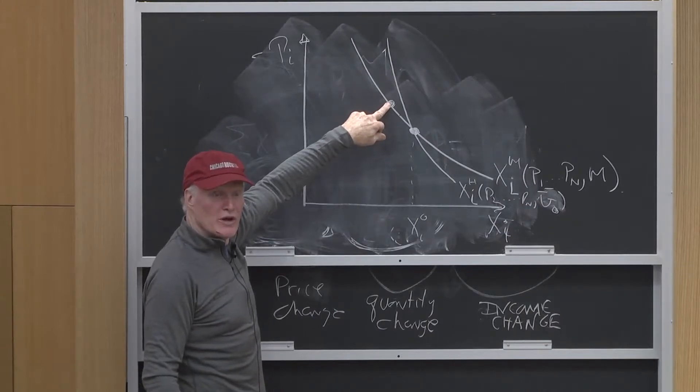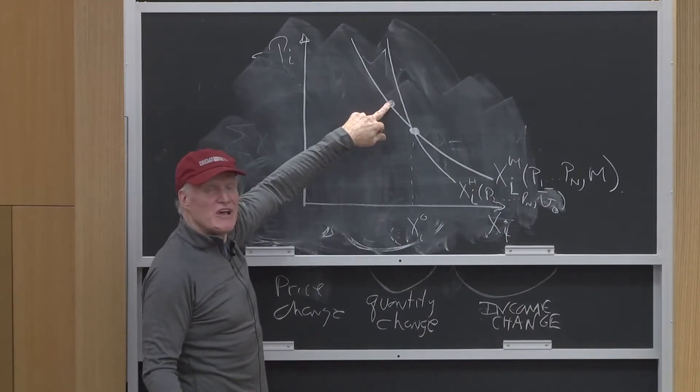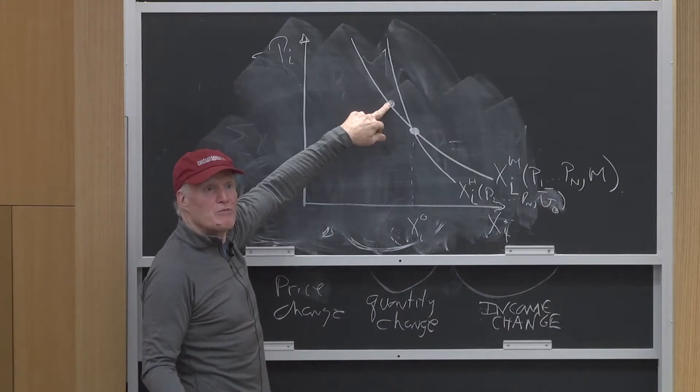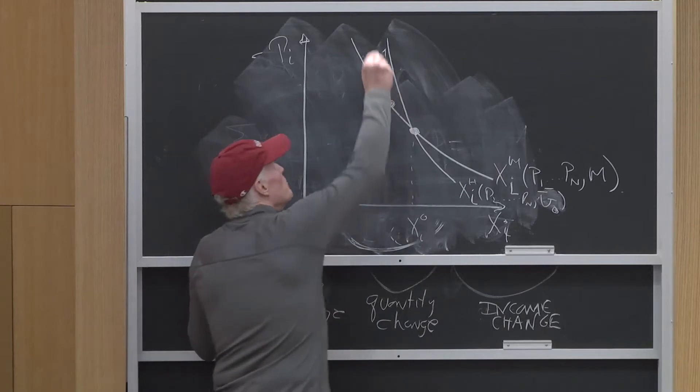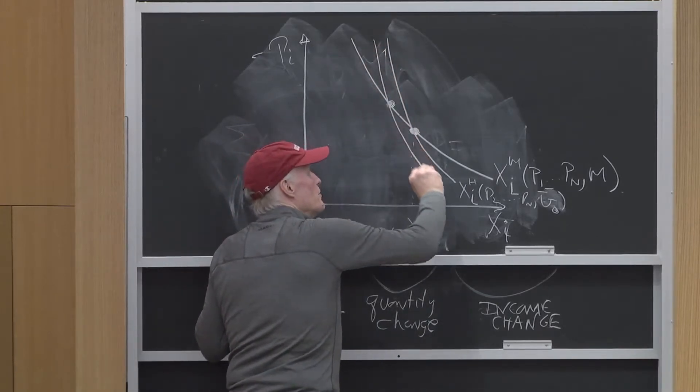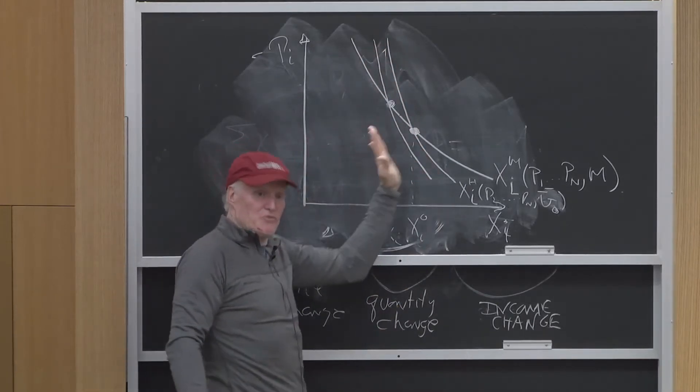This is a Hicksian demand curve for a lower level of utility, and this is a normal good. Since this is a Hicksian demand curve for a normal good with lower utility, at any price I'm going to buy less, which makes sense.